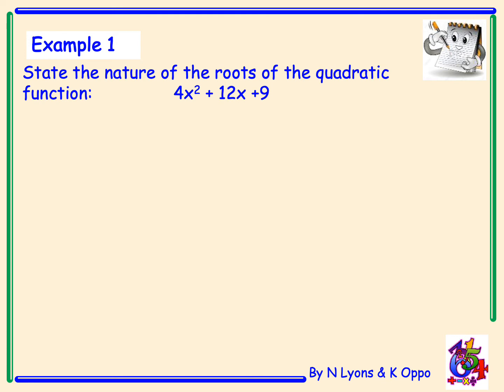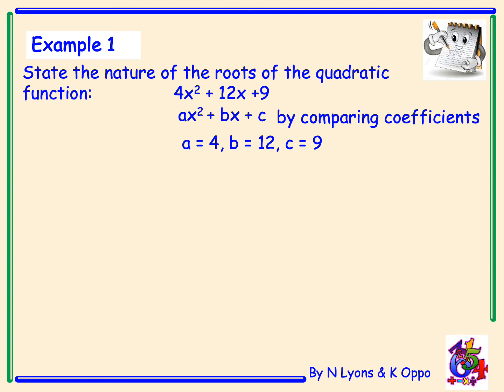Let's try some examples. Example 1: state the nature of the roots of the quadratic function 4x squared plus 12x plus 9. First, write out the general form of a quadratic function, ax squared plus bx plus c, then compare coefficients. That gives us a equals 4, b equals 12, and c equals 9. Now we calculate the discriminant, b squared minus 4ac.